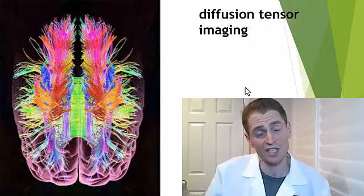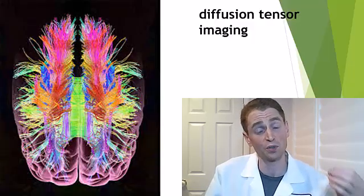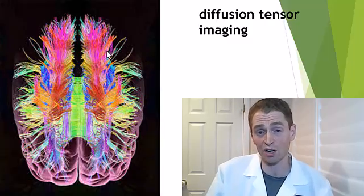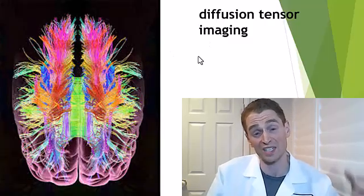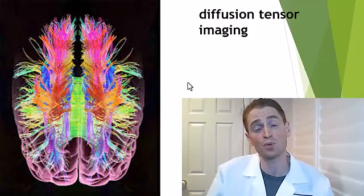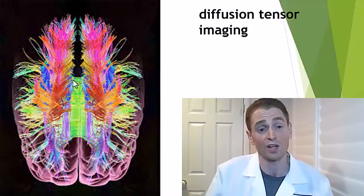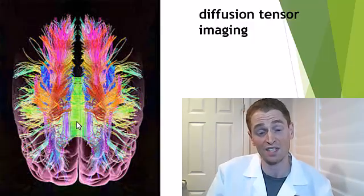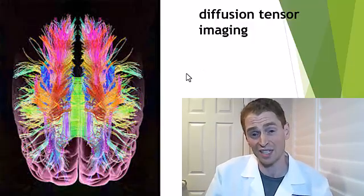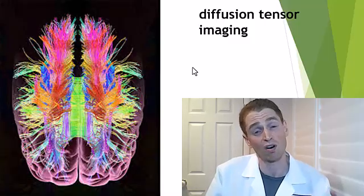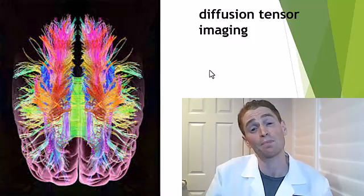Here's diffusion tensor imaging, where the diffusion or movement of water is detected. We can essentially see where axons or nerve fibers are because we can see where that fluid is going. Beautiful three-dimensional images can be created where we can see the white matter tracts — including the corpus callosum, the white matter tract between the two hemispheres of the brain. We can also assess the integrity of the white matter. This isn't really used clinically right now, but there's some preliminary research in chronic traumatic encephalopathy and in multiple sclerosis.